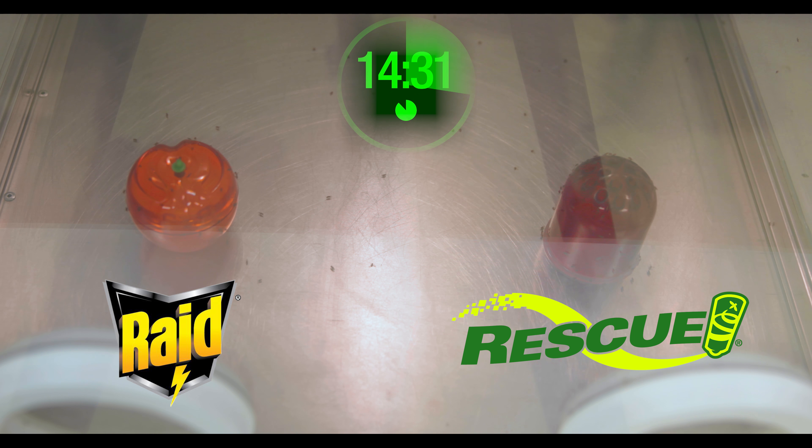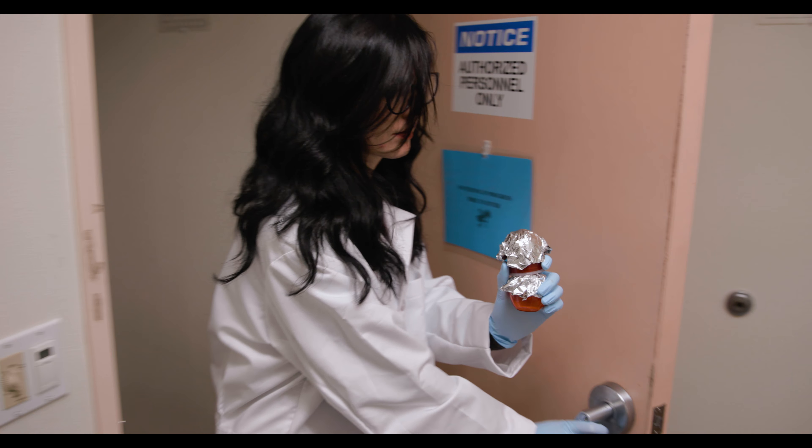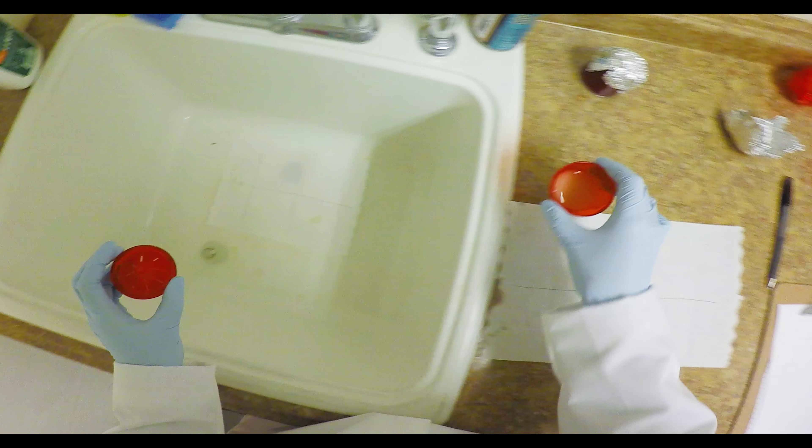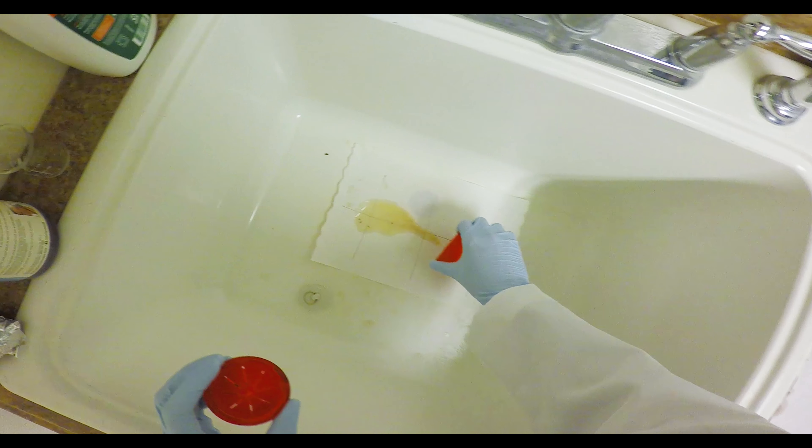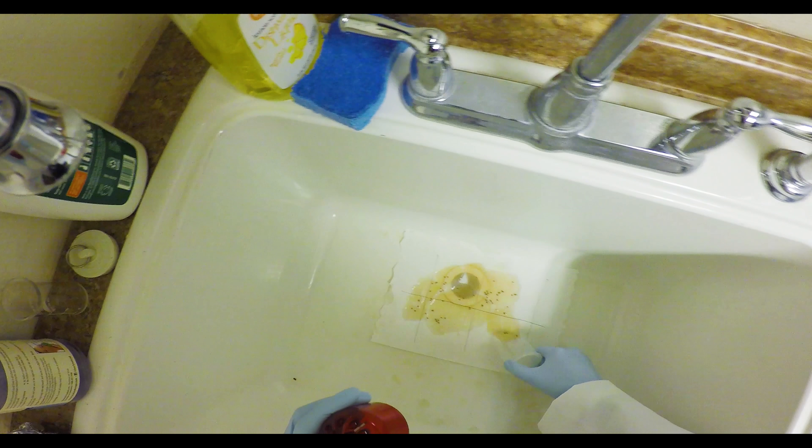Then the next replicate was conducted with trap positions switched to eliminate bias. At the end of testing, the traps were removed and the fruit flies were knocked down with CO2. The traps were taken into another room and emptied into the sink so that the fruit flies could be counted.